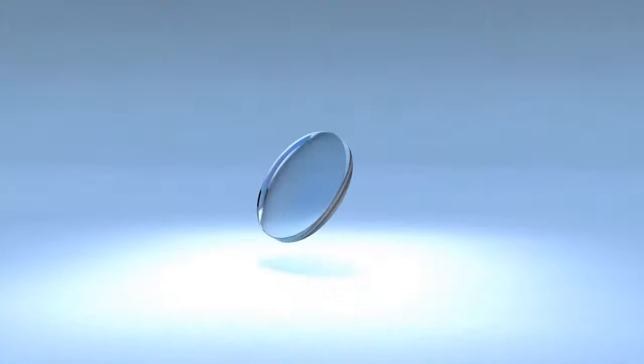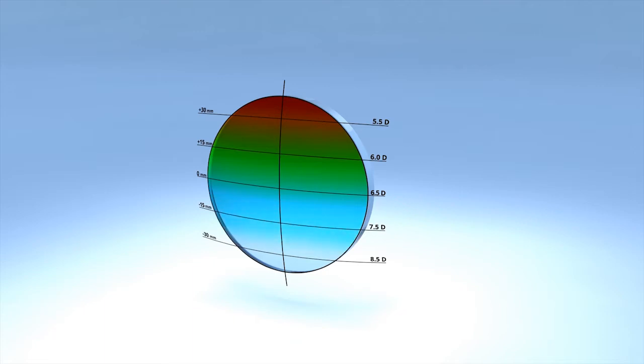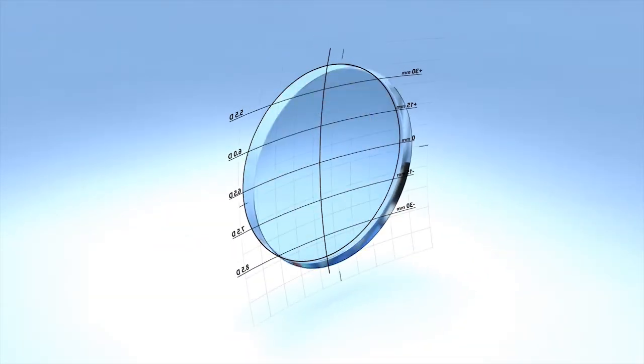The camber lens blank improves on the spherical lens blank by offering a continuously increasing base curve to better match the different powers in each zone of the finished progressive lens. The state-of-the-art digitally designed back surface of the lens is calculated in mutual accord with the unique camber variable base curve.